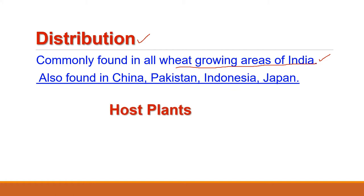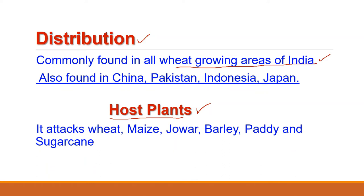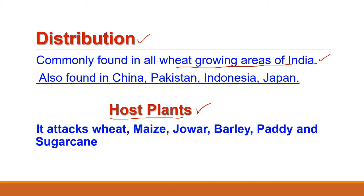Although wheat is the main host plant of this pest, this pest also feeds on other crops such as maize, jowar, barley, paddy and sugarcane. It also feeds on Genia grass. So we can say that this is an oligophagous pest.